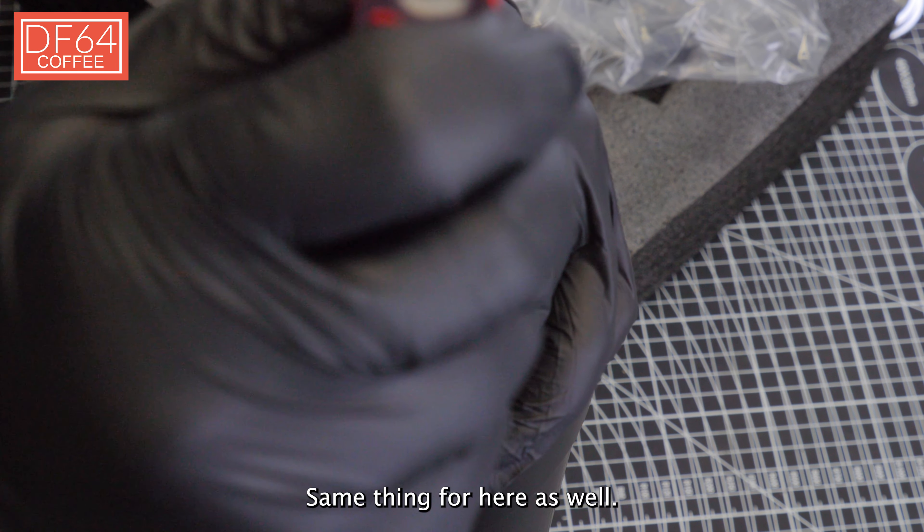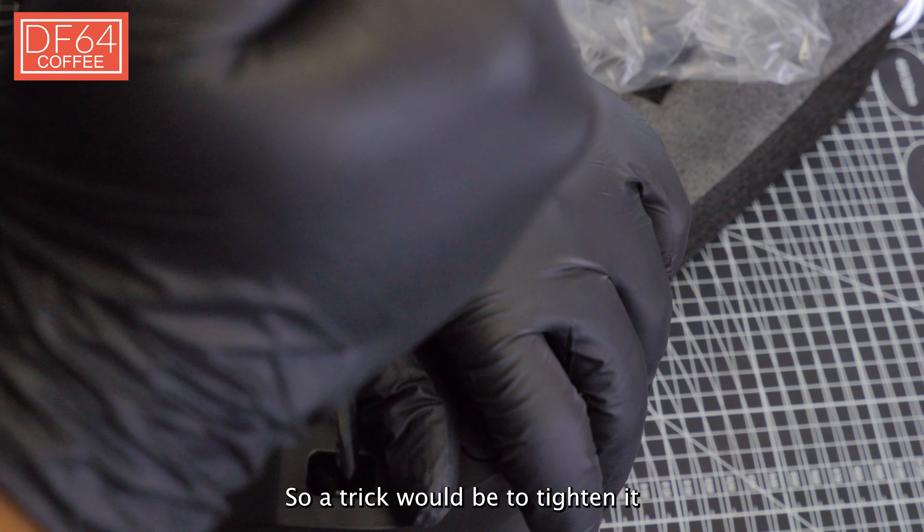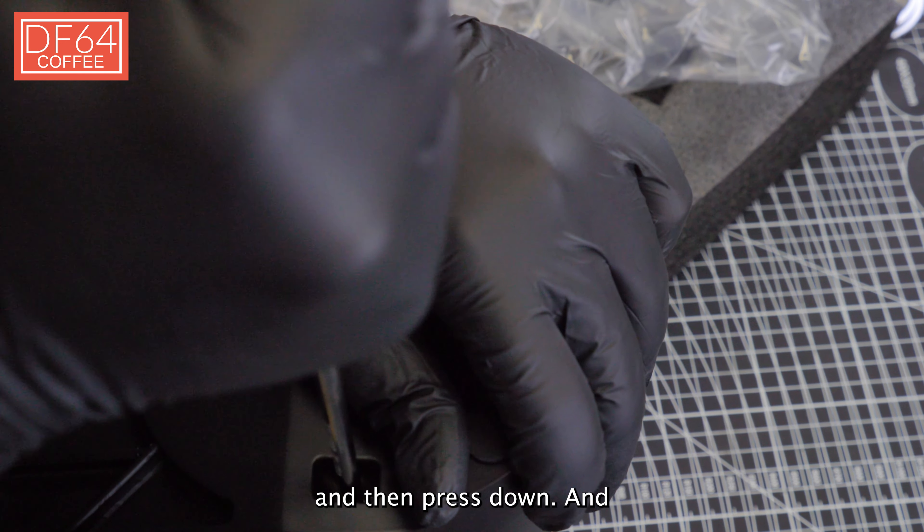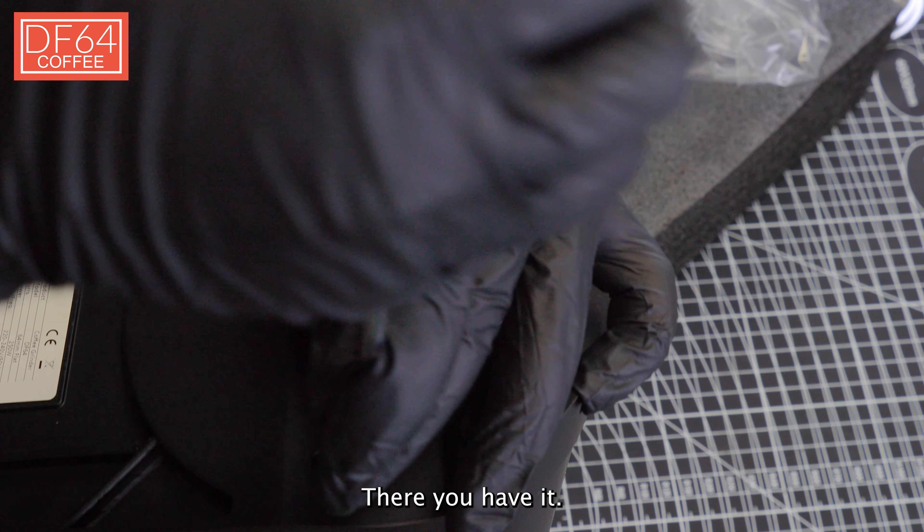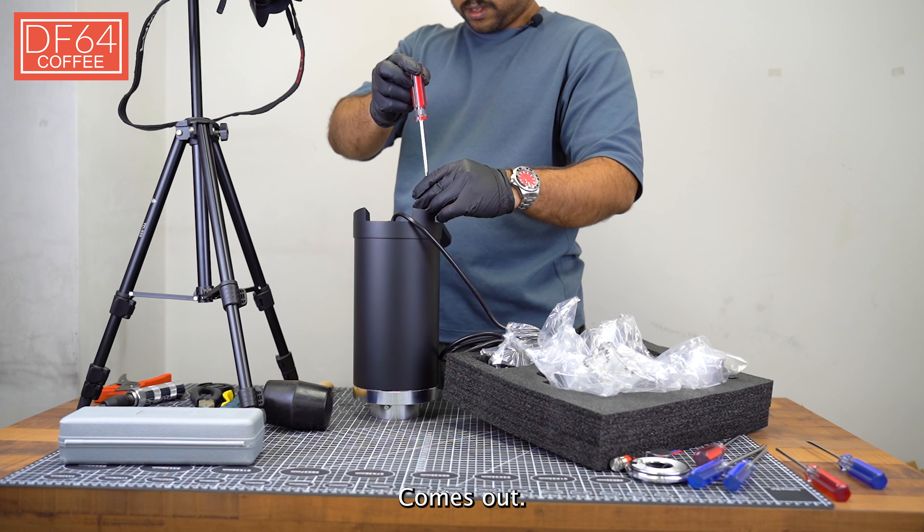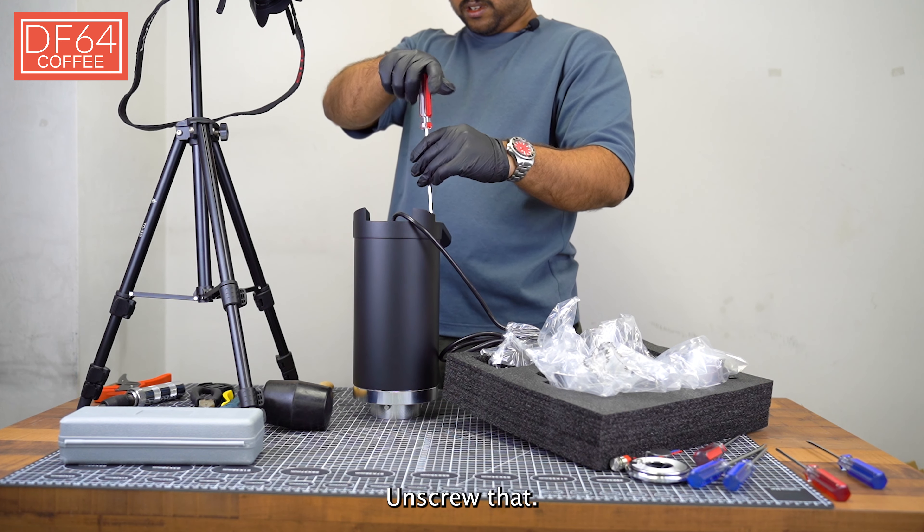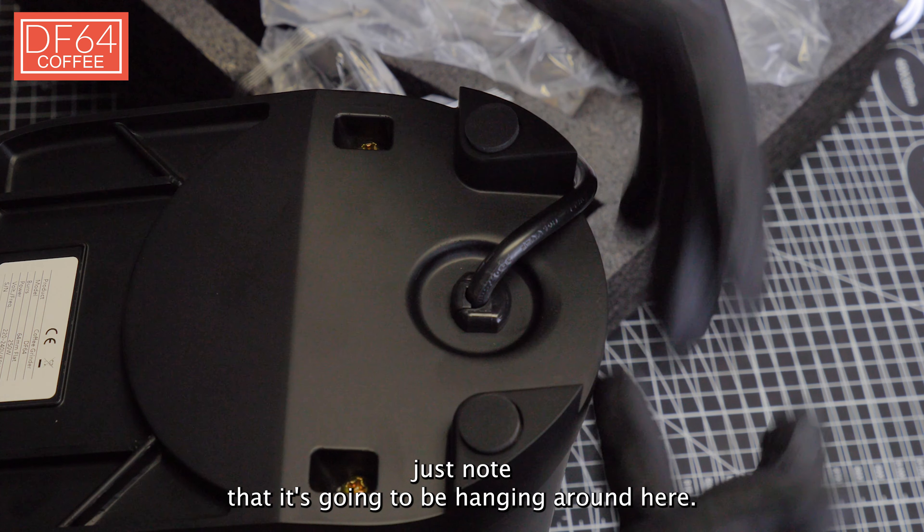Now as you can see there are two screws here, one here and one here. We're going to remove that. There we go. Same thing for here as well. Sometimes it's hard because it rolls, so a trick would be to tighten it then press down and there you have it, comes up.